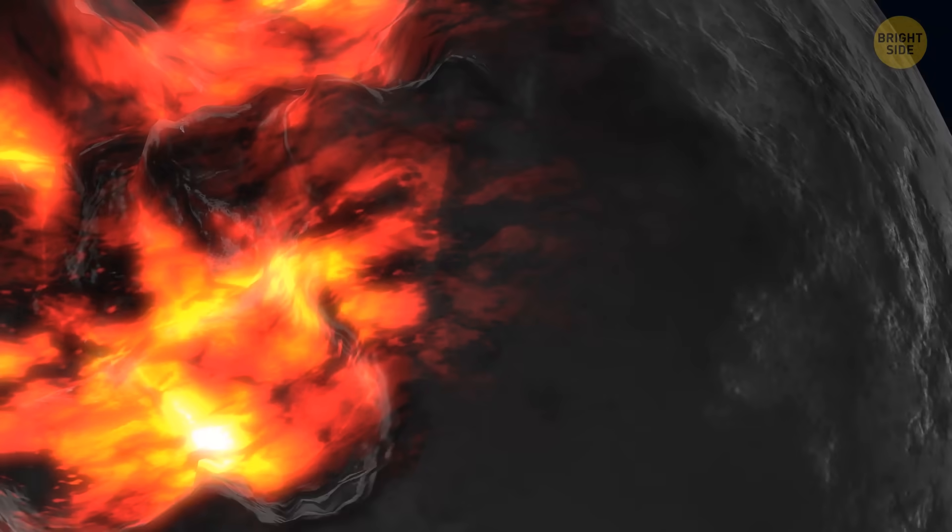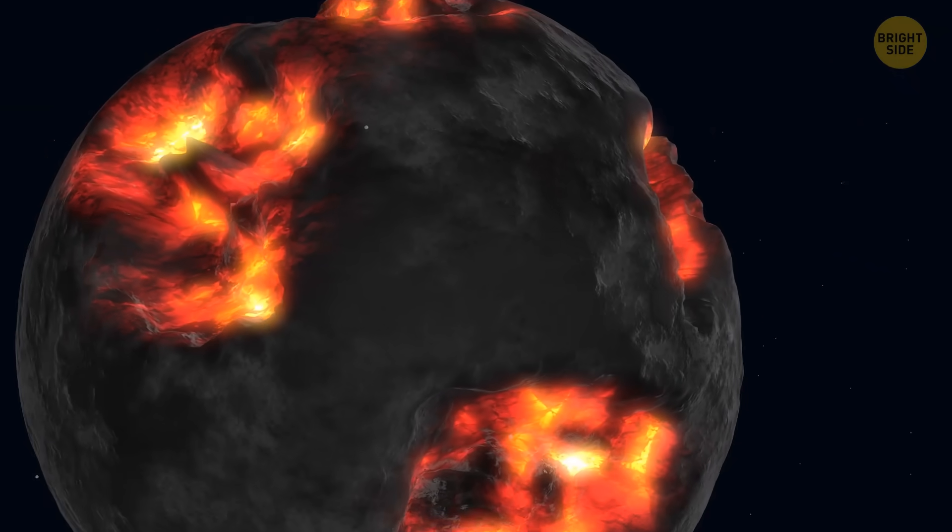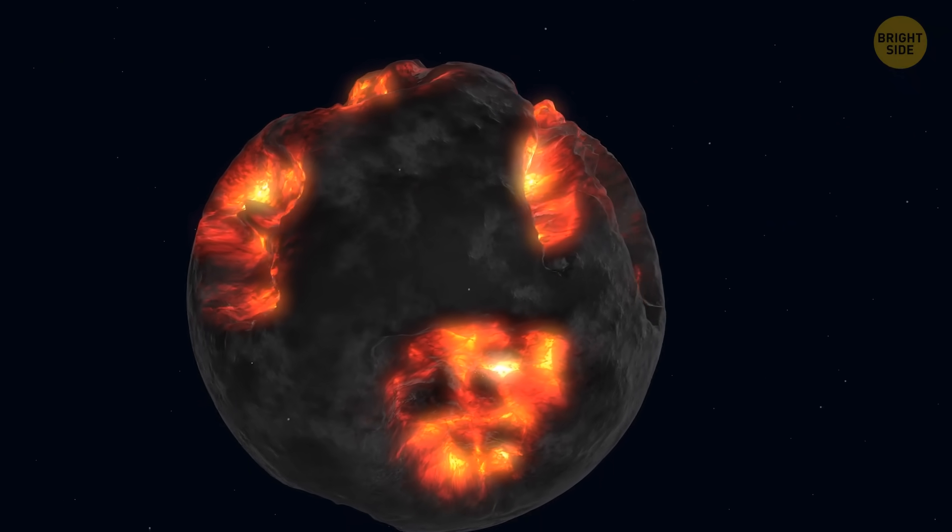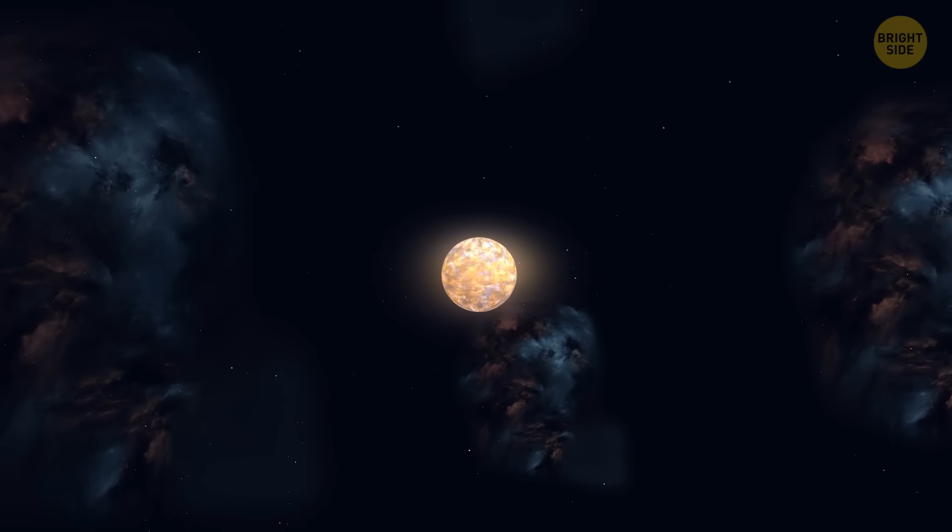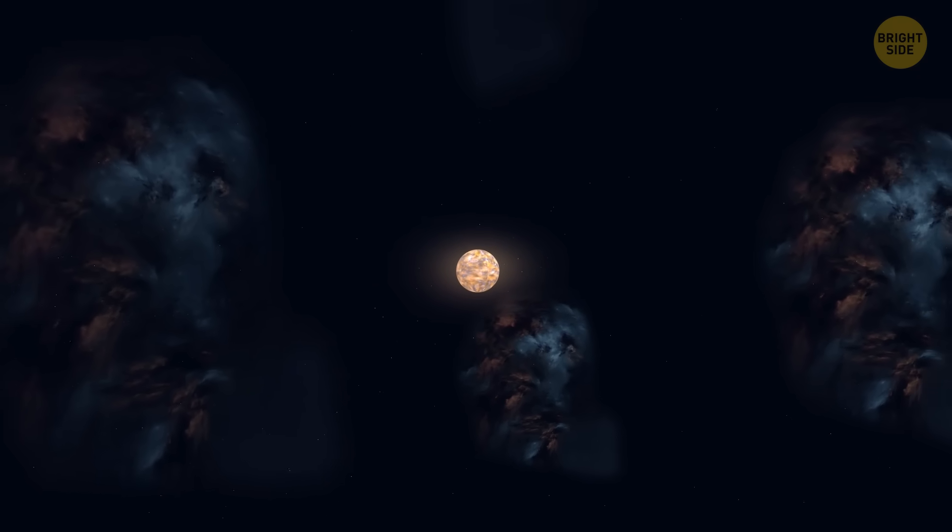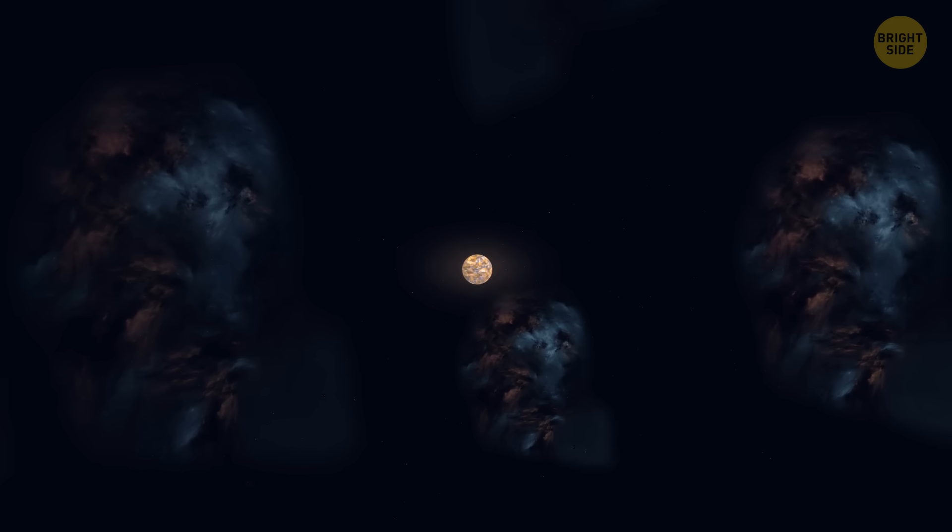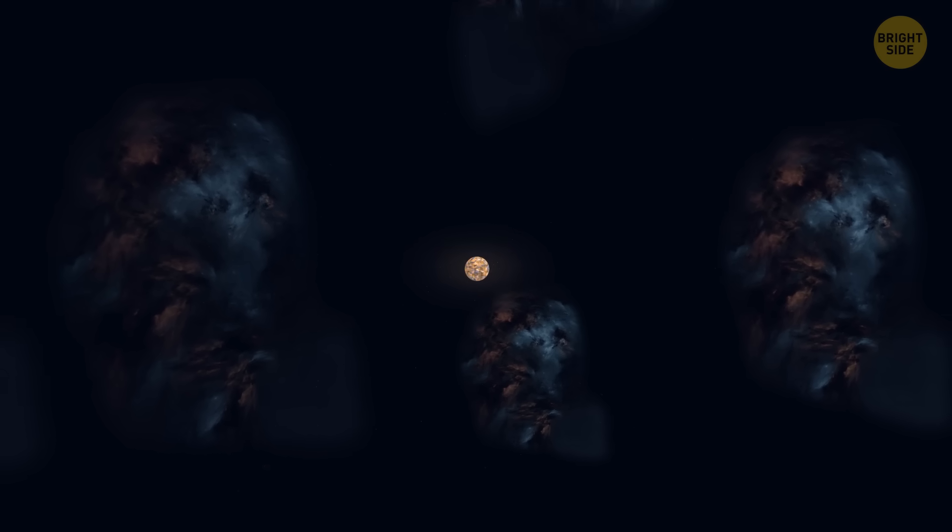This is very different from other hot Jupiters, which were quite delicately nibbled by their stars. Astronomers aren't sure if there are any other planets orbiting this star, perhaps at a safer distance. But even if there are, thousands of years will probably pass before they become the star's main course or dessert.